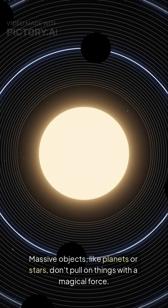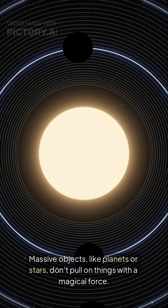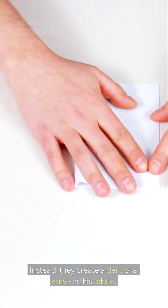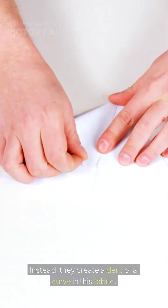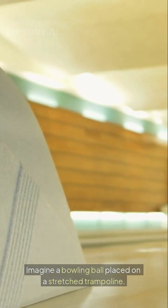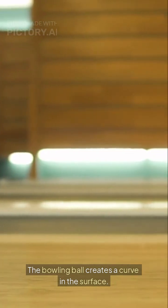Massive objects, like planets or stars, don't pull on things with a magical force. Instead, they create a dent or a curve in this fabric. Imagine a bowling ball placed on a stretched trampoline. The bowling ball creates a curve in the surface.